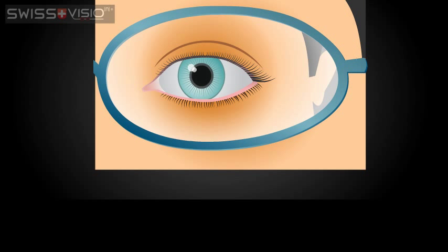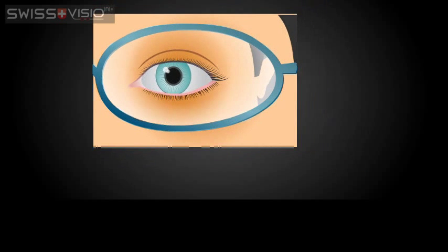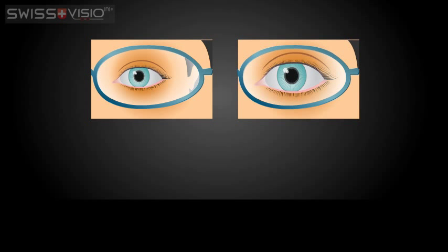Strong minus prescriptions can reduce the size of the eye, which creates a very unnatural look. Aspheric lenses correct this unwanted reduction, making the wearer's eyes look natural and proportionate.